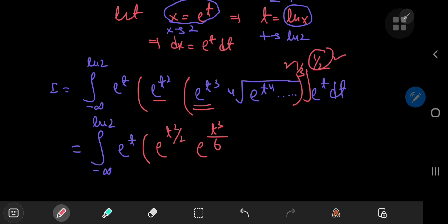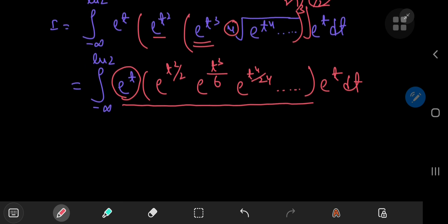Similarly, this e to the t to the 4th power, its exponent t to the 4 will be divided by 6 times 4, which is 24. And we see a pattern emerging here quite nicely.